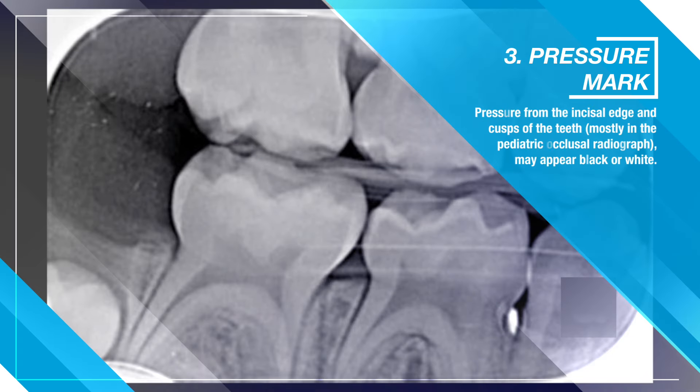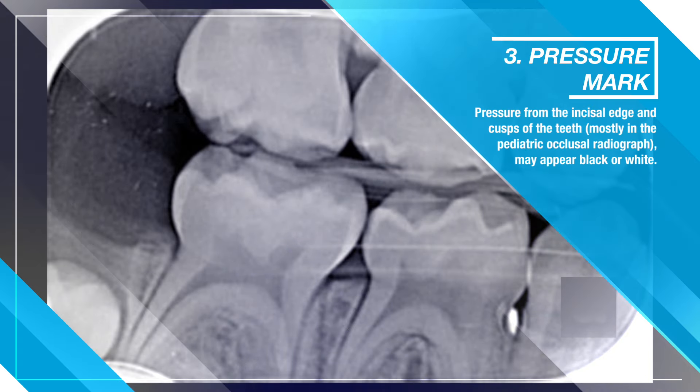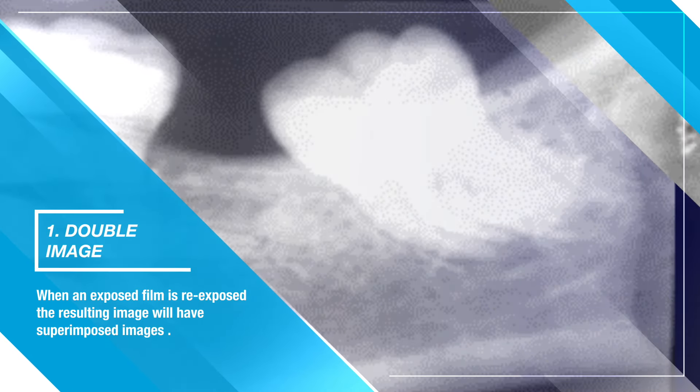Three — pressure mark. Pressure from the incisal edge and cusps of the teeth, mostly in the pediatric occlusal radiograph, may appear as black or white marks on the film.